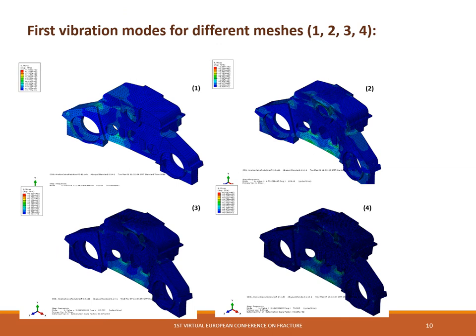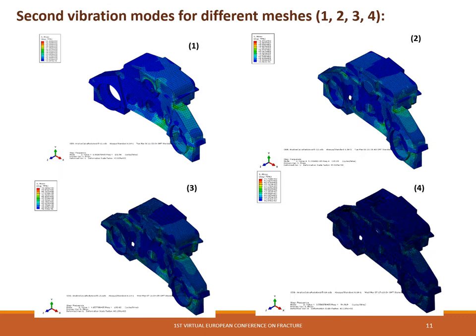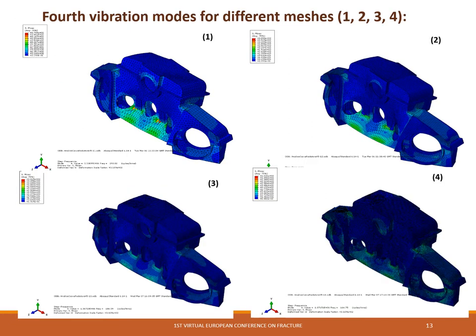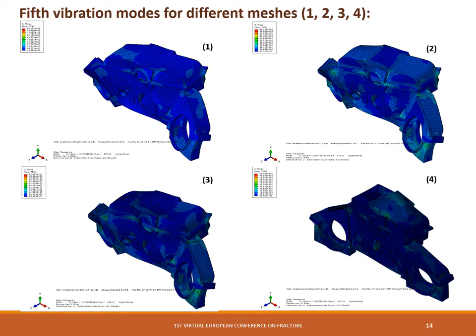The first through fifth vibration modes for different meshes are presented across several slides. In the fourth vibration mode, a large deformation in the body is observed. In the fifth vibration mode, the biggest deformation is observed overall — in mesh three the biggest deformation occurs in the body, and in mesh four the biggest deformation occurs in the cover.